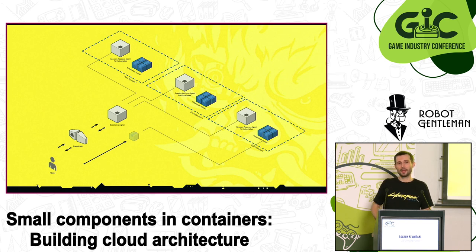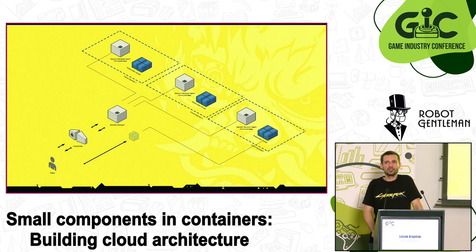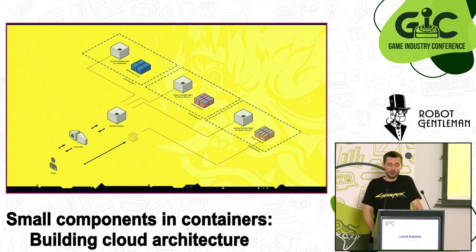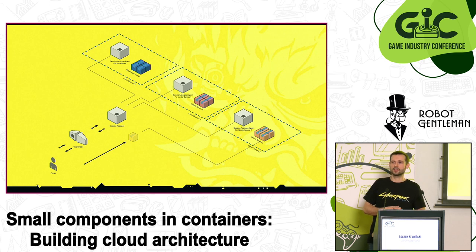That was the generic Kubernetes service. At some point, cloud operators noticed game developers might have specific needs, so they started offering special services dedicated to game dev — APIs for game server scaling. Since we had the option to experiment, we created additional agents dedicated to those services. AWS has an offering for orchestration, Azure has something similar, and we created connectors to those services.